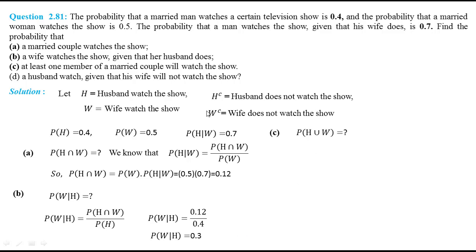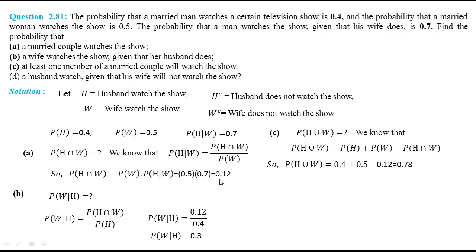Part C: at least one of the married couple watches the show, meaning the husband or the wife watches the show. The probability of H union W equals probability of H plus probability of W minus probability of H intersection W. Since the events are non-mutually exclusive because probability of H intersection W exists, we use this formula. Using the information from the problem and part A, we have probability of H union W equal to 0.78. This is the probability that at least one member of the married couple will watch the show.